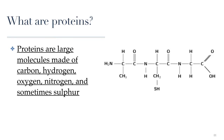So what are proteins? Proteins are usually very large molecules that, just like carbohydrates and fats, are made of carbon, hydrogen, and oxygen. But unlike carbs and fats, proteins also contain lots of nitrogen, and depending on the protein, a little bit of sulfur.